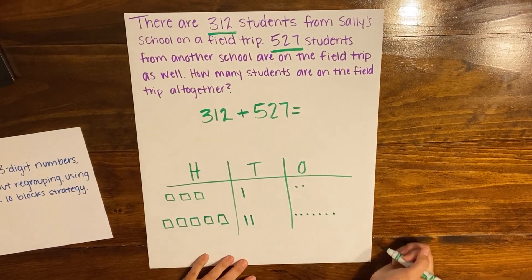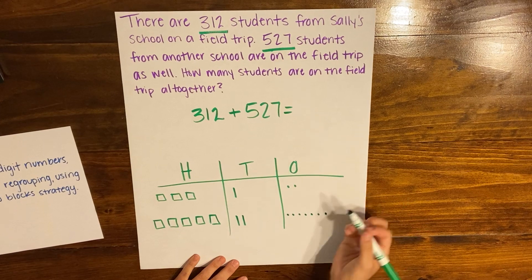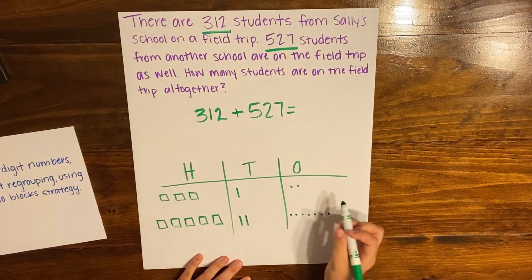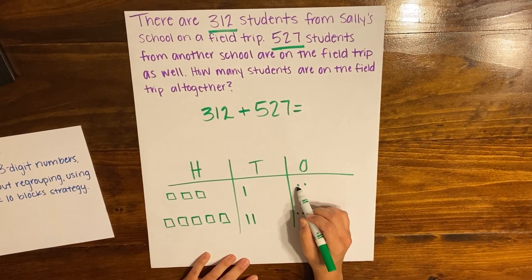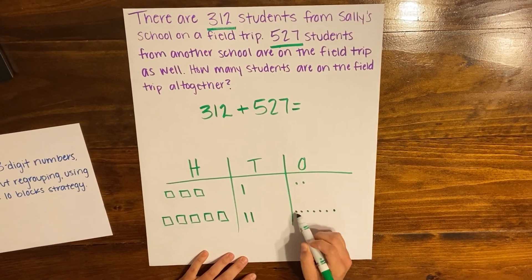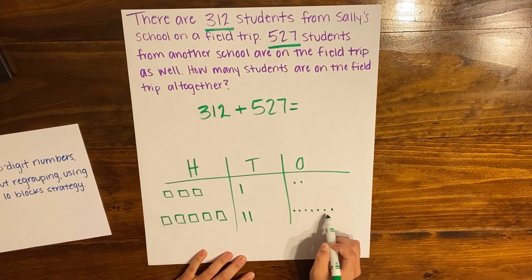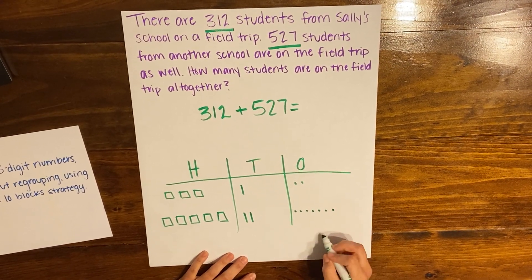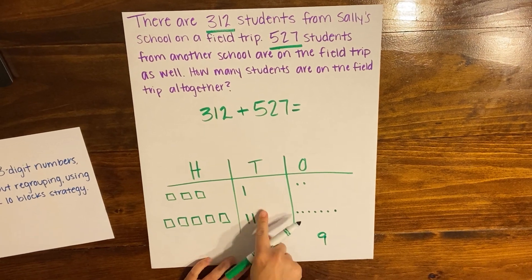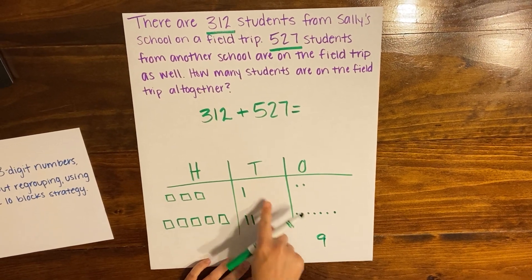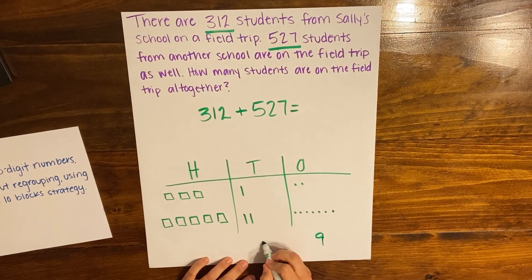When I actually go to add them, I'm going to start in my ones column and count how many there are altogether: one, two, three, four, five, six, seven, eight, nine. So there are nine ones. When I move to my tens, I see that I have one and two more, so that's three tens.